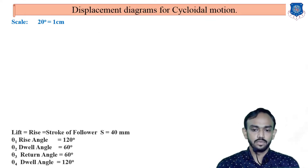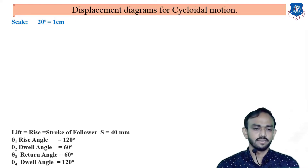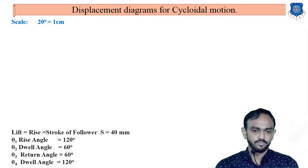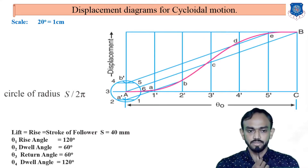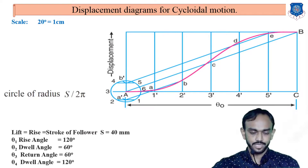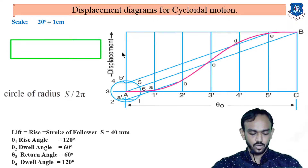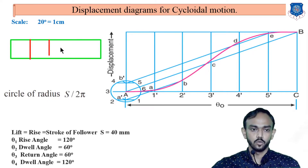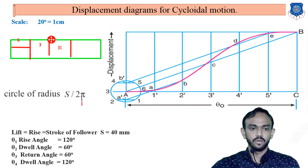Now, last and a very important diagram: the displacement diagram for cycloidal motion. It is very tricky and rare — asked less frequently. You make the rectangle as usual: 18 cm by height, then divide into four parts depending on the angles. For example, 120 degrees means 6 cm, 60 degrees means 3 cm, and 120 degrees means 6 cm again. Then six parts of rise and six parts of return, same as before.